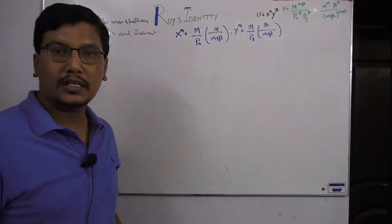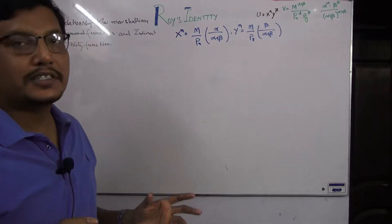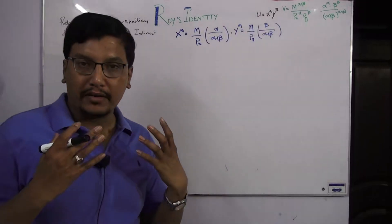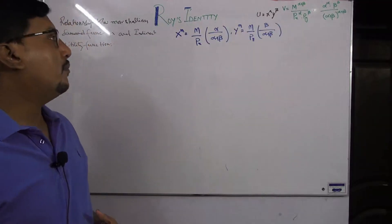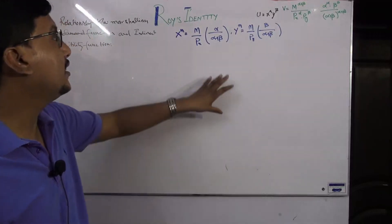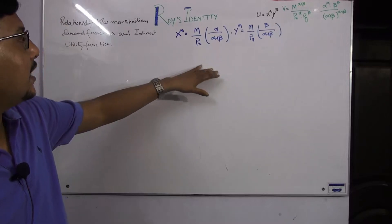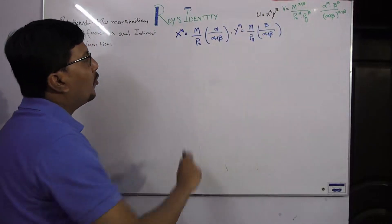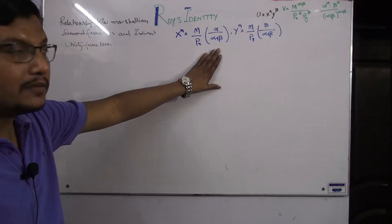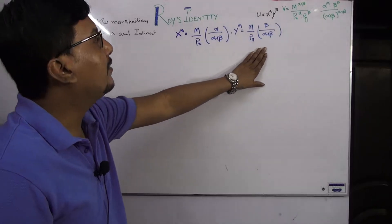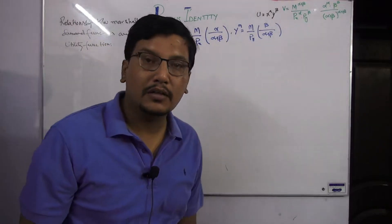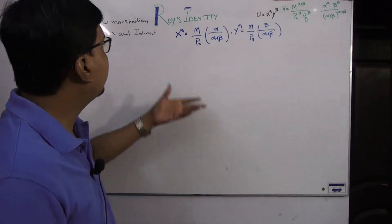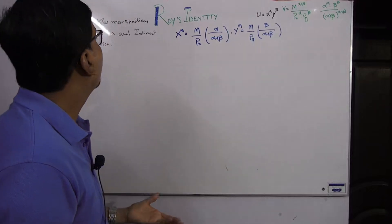We will have a utility function — taking an example of a two-good case with the Cobb-Douglas utility function. Subject to the budget constraint, using the Lagrange multiplier method, we can easily calculate the Marshallian demand function. The Marshallian demand function is x = (m / px) × (α / (α + β)) and y = (m / py) × (β / (α + β)).